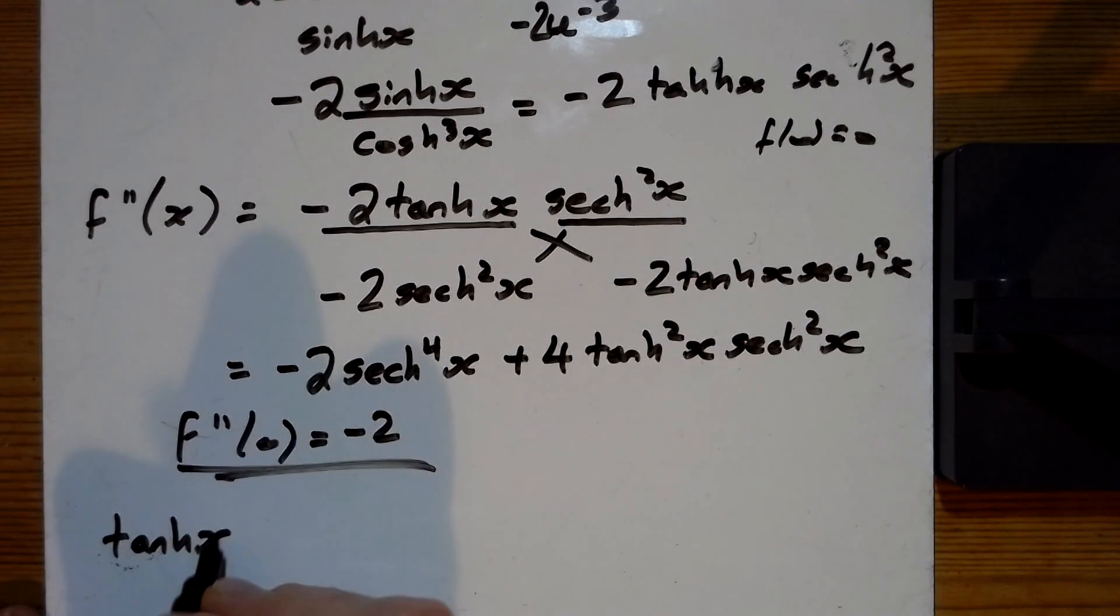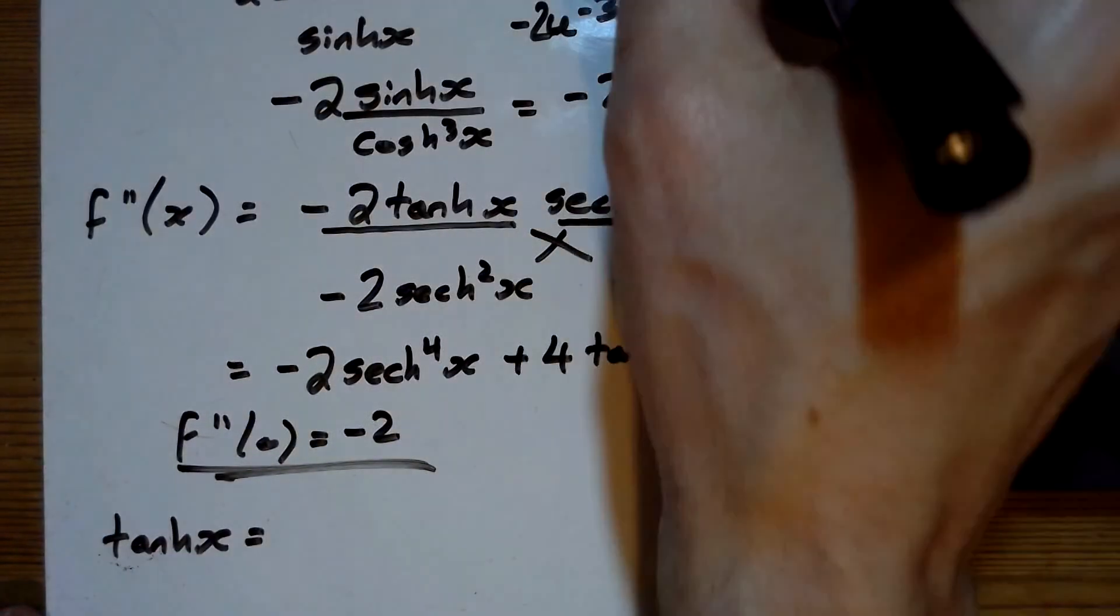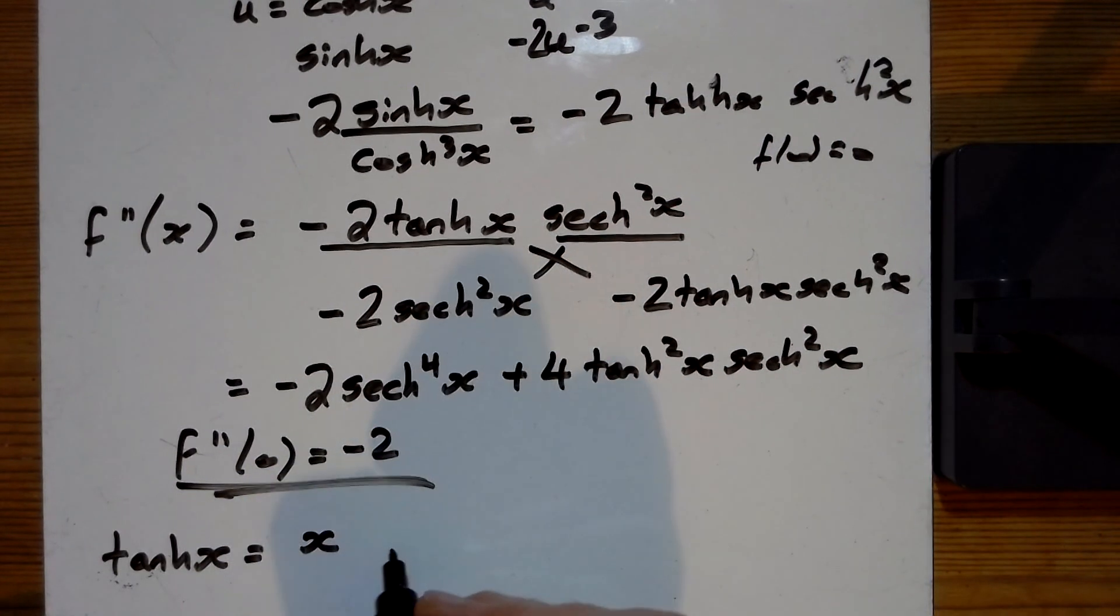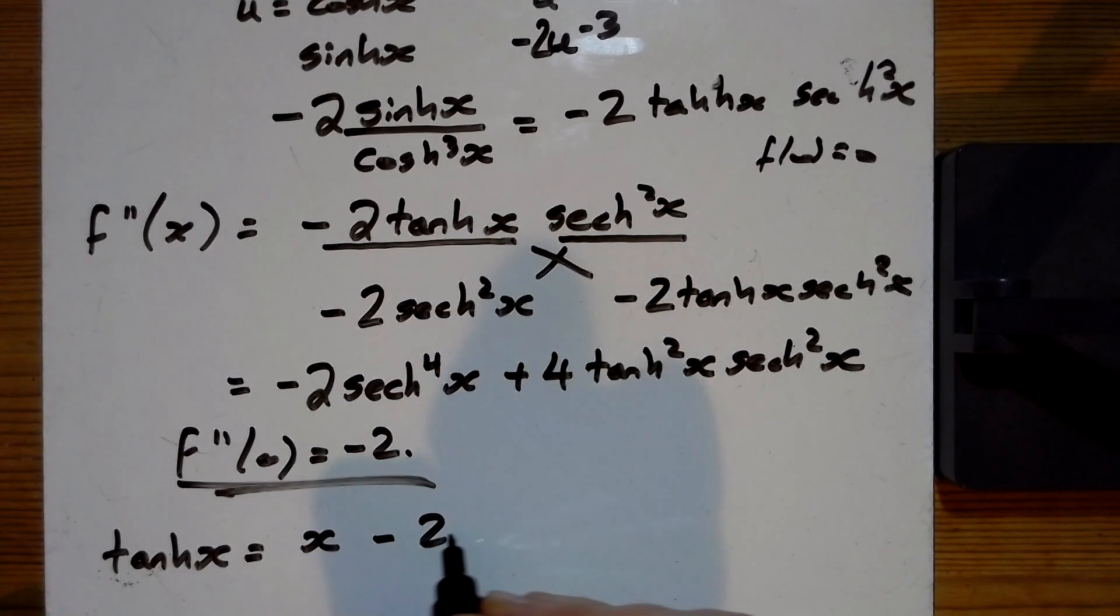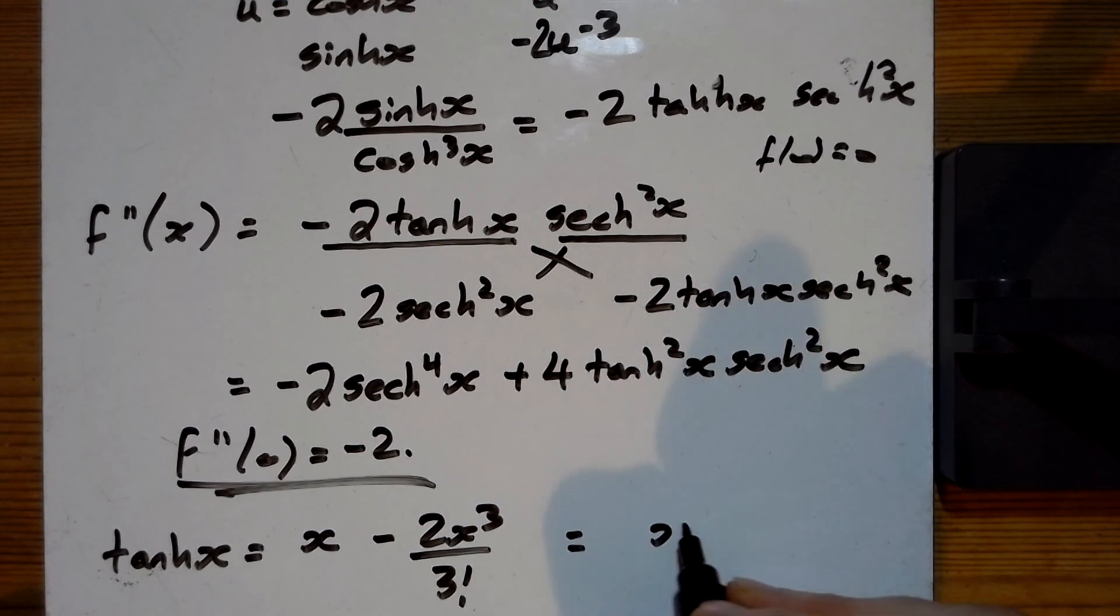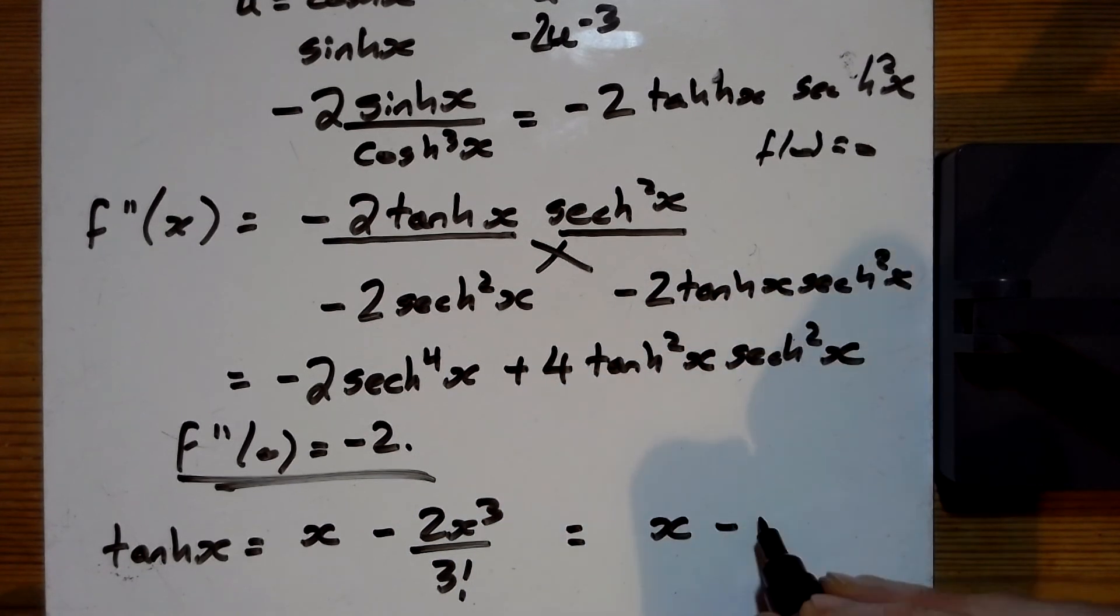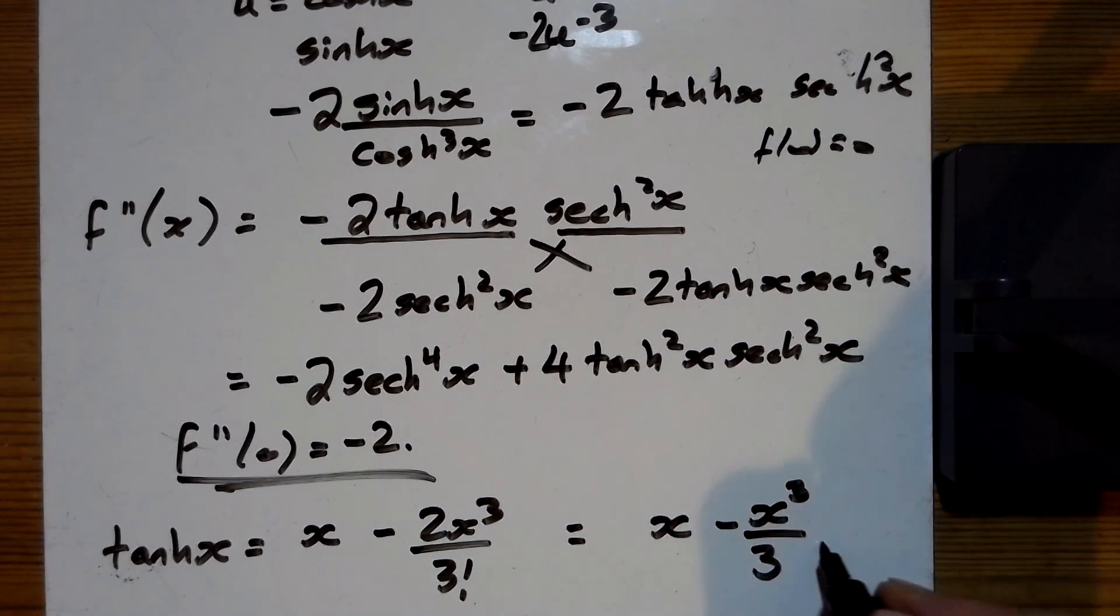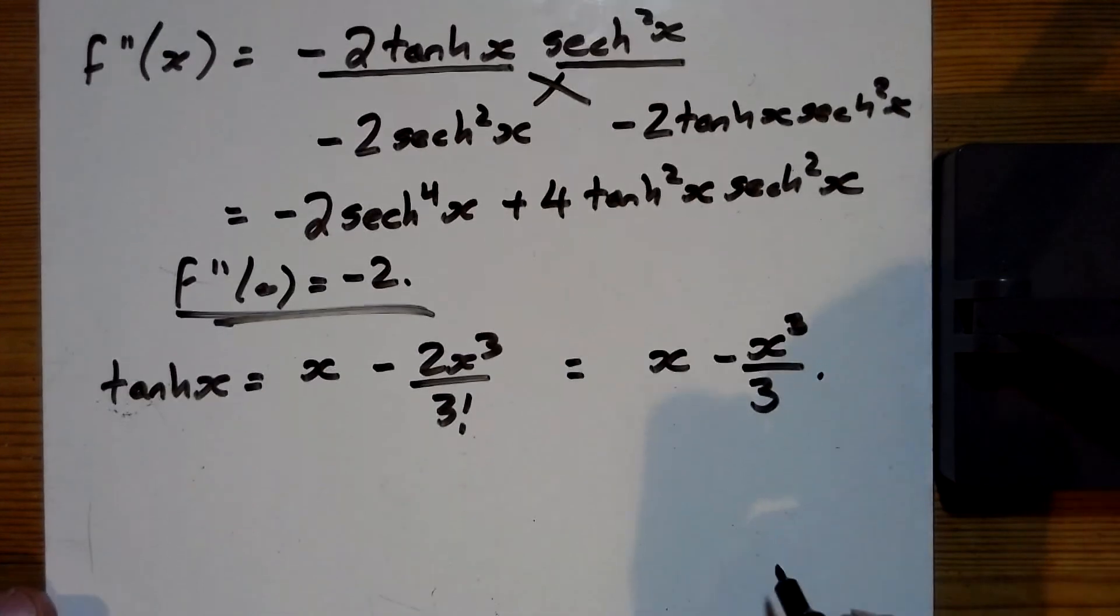Right. So the tanh of x is equal to the first f of x number, which is 0. So that's no good. Then we've just got x over 1 factorial. Fine. No x squareds. And then I've got the minus 2 here, minus 2 x cubed over 3 factorial, which equals to x minus x cubed over 3, because that's 6, cancelling with that, which is what we were trying to show it gave. Thank heavens for that.